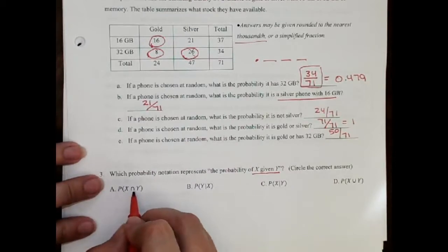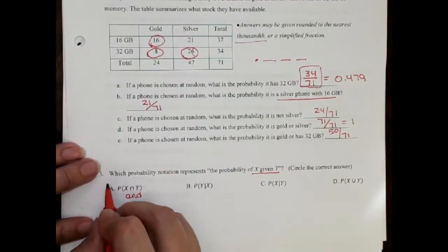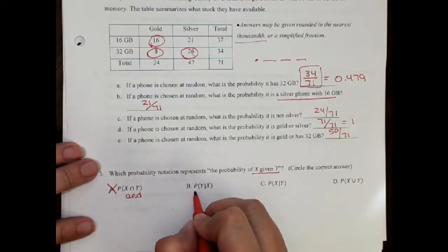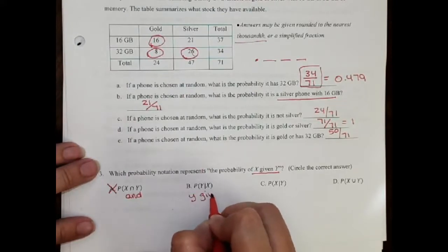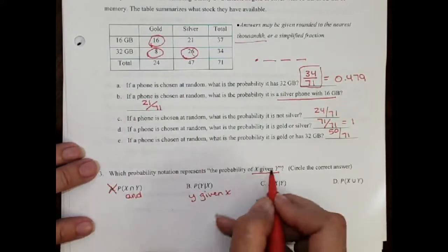What is this symbol? The symbol is the and. X and Y, so that's not right. This one says the probability that Y given X. That's close to what they wanted, but not right.